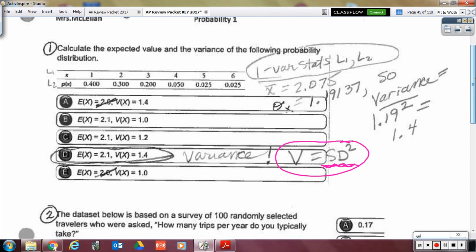Okay, so number one was one of those where you did one variable stats of list one with list two's frequency, and once the calculator gave you the standard deviation, it asked for the variance. So C is the trick answer, it's not C, because 1.2 was the standard deviation. You had to square that to get 1.4.